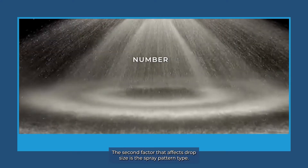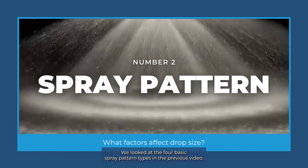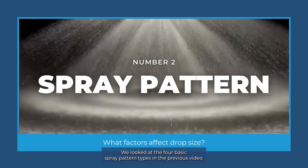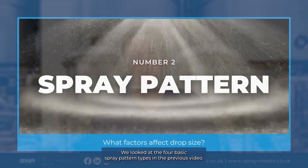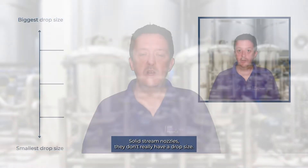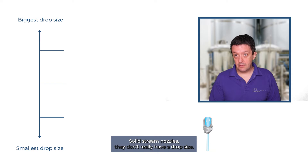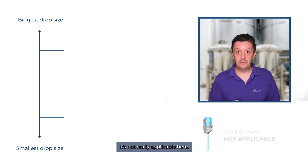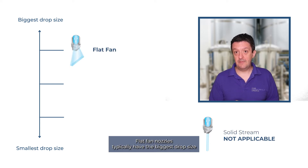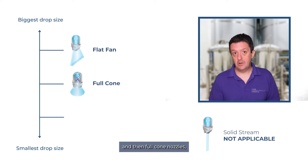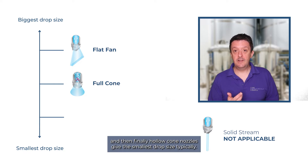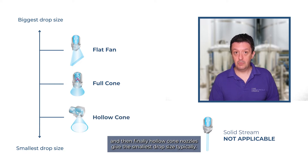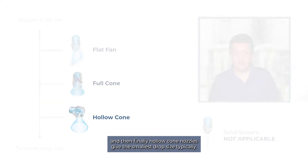The second factor that affects drop size is the spray pattern type. We looked at the four basic spray pattern types in a previous video. Solid stream nozzles don't really have an applicable drop size. Flat fan nozzles typically have the biggest drop size, followed by full cone nozzles, and then hollow cone nozzles, which typically give the smallest drop size.